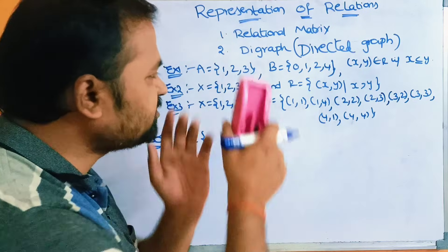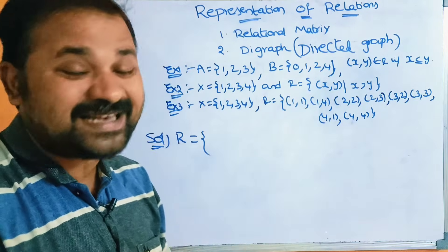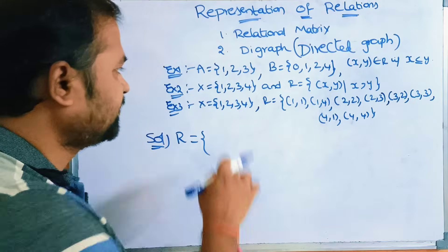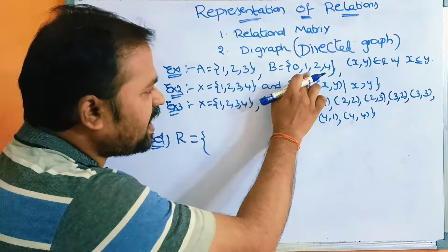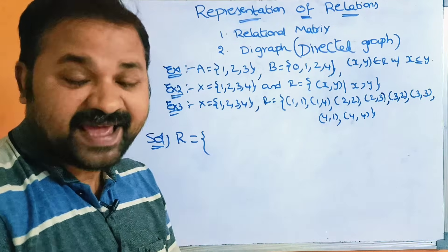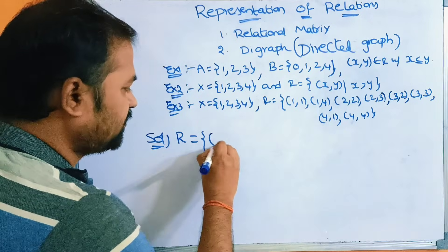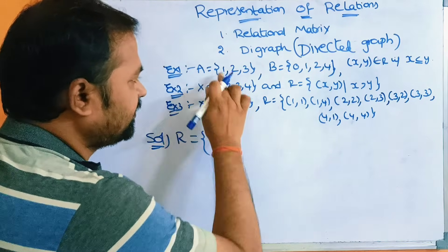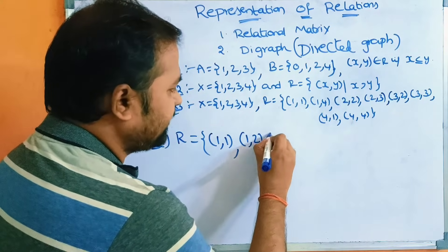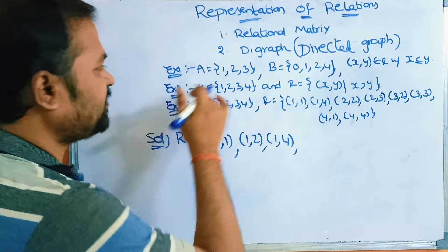Can we write (1,0)? No, because 1 is not less than or equal to 0 — condition is false. Can we write (1,1)? Yes, because 1 equals 1, so 1 ≤ 1 holds. Next, (1,2): yes, 1 < 2. And (1,4): yes, 1 < 4. So the pairs from element 1 are (1,1), (1,2), (1,4).